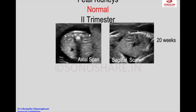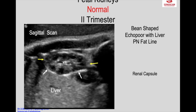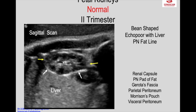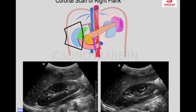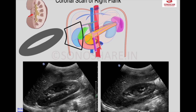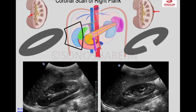Coming to the kidneys — axial scan of the kidneys. The layers around the kidney include the renal capsule, perinephric pad of fat, Gerota's fascia, parietal peritoneum, Morrison's pouch, visceral peritoneum, and liver capsule. I will illustrate with the adult kidney, which is better appreciated. On the left side is the sagittal view, on the right side is the coronal view. In the sagittal scan you see the parenchyma all around, whereas in the coronal scan the section is taken along the plane of the kidney.